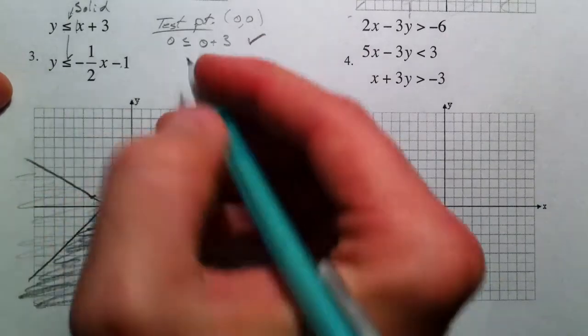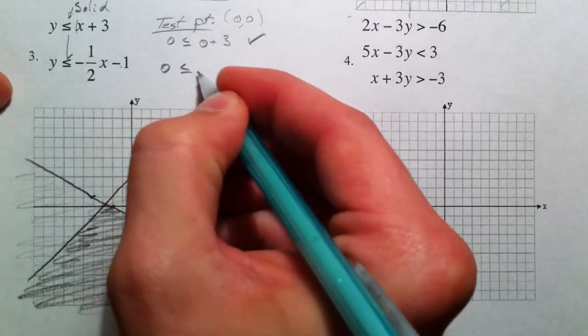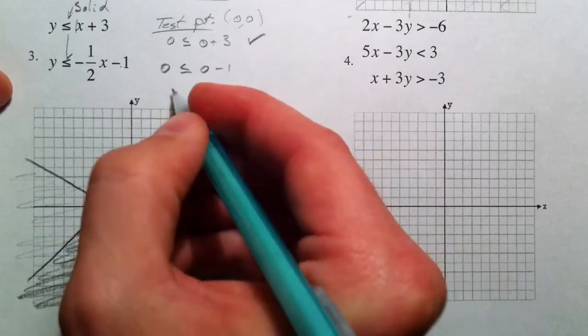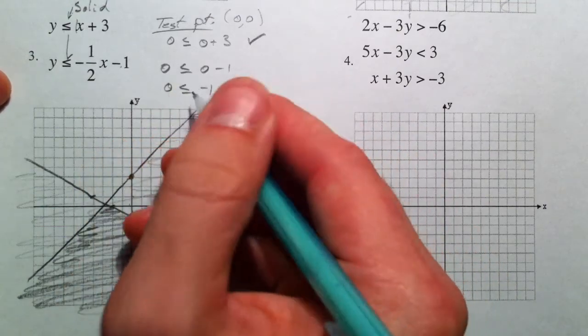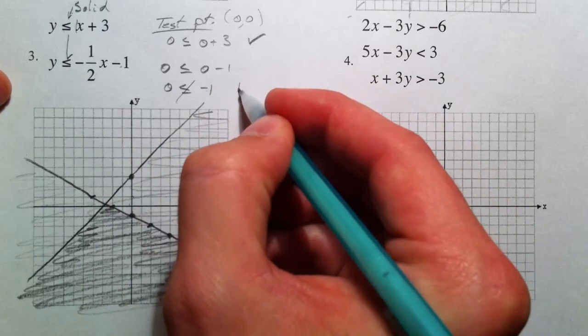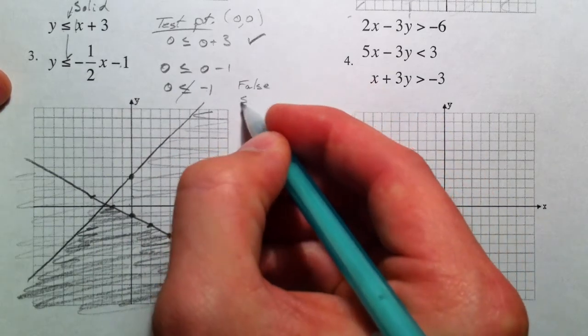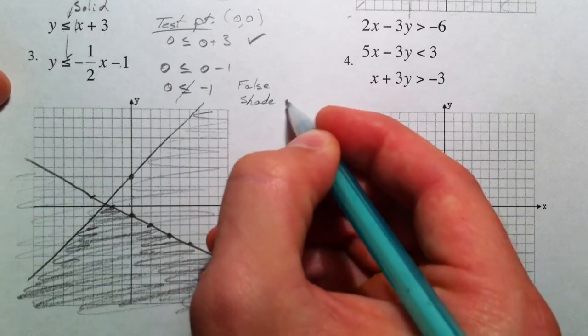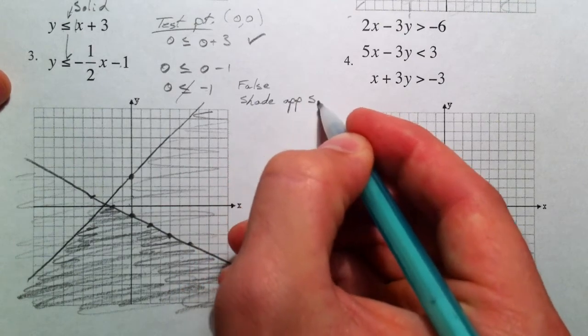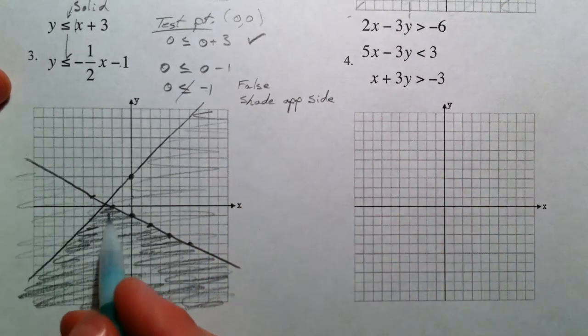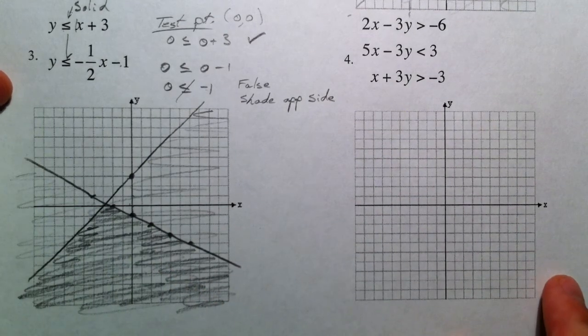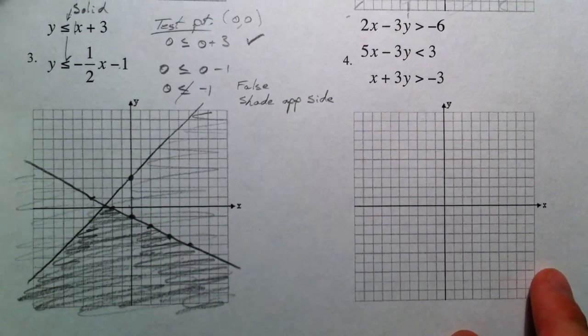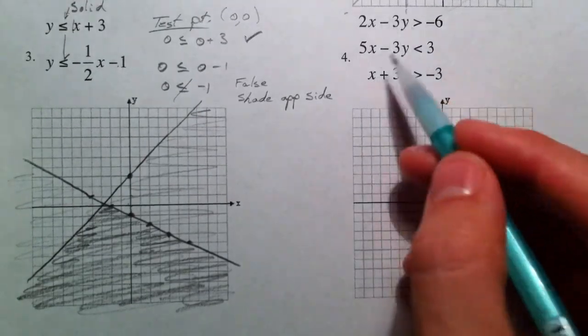And then this one is 0 is less than or equal to 0 minus 1. And 0 is not less than negative 1. And so that's false. And so you shade the other way. Shade the opposite side. And so we go to the other side of the line. And that's why we shaded that side.